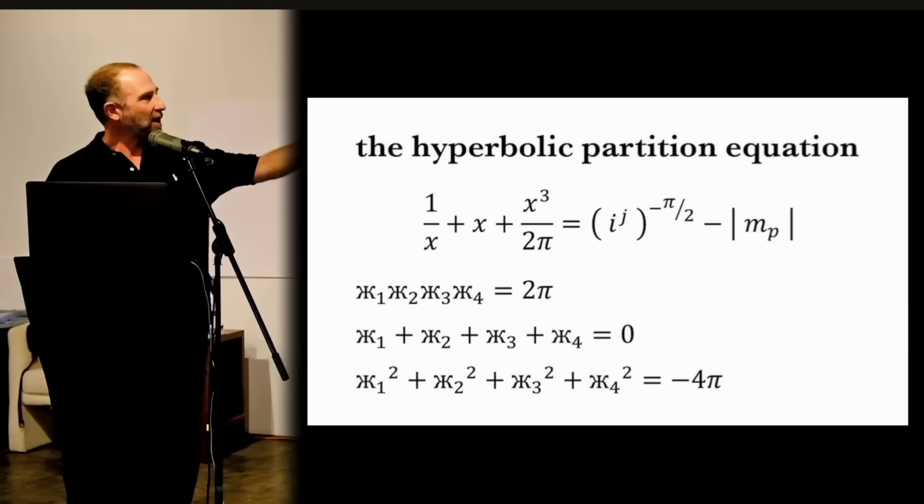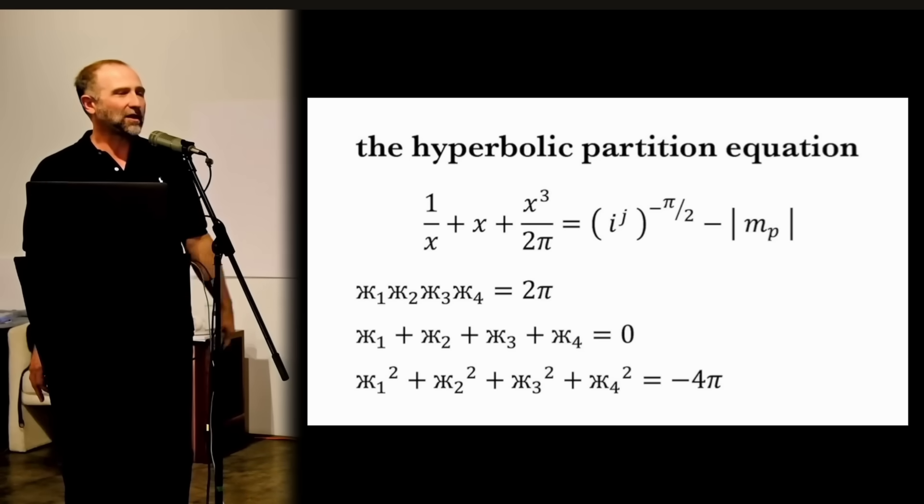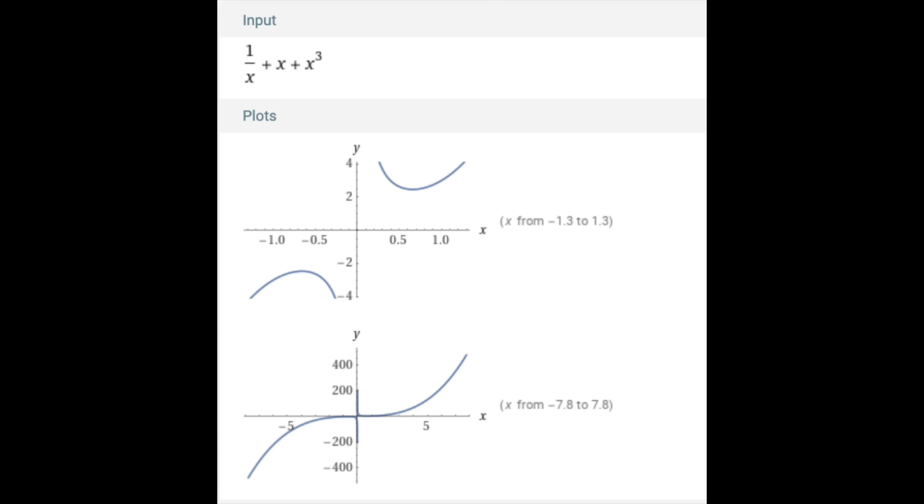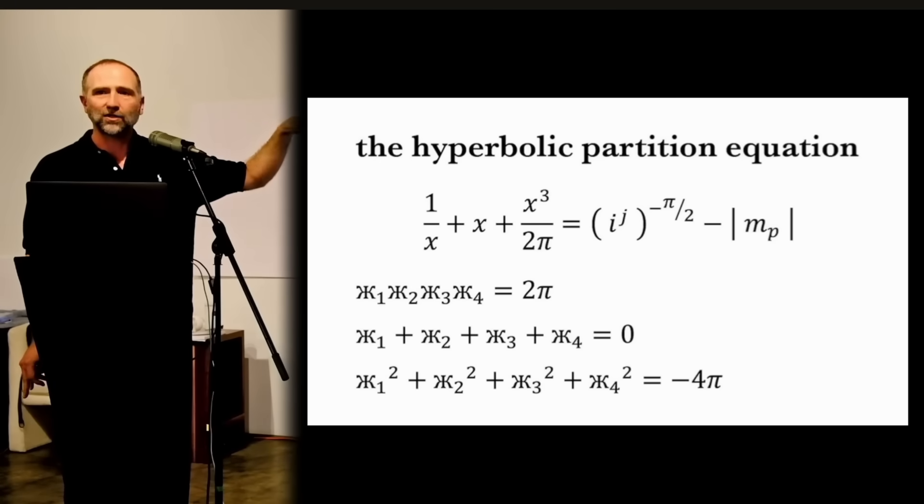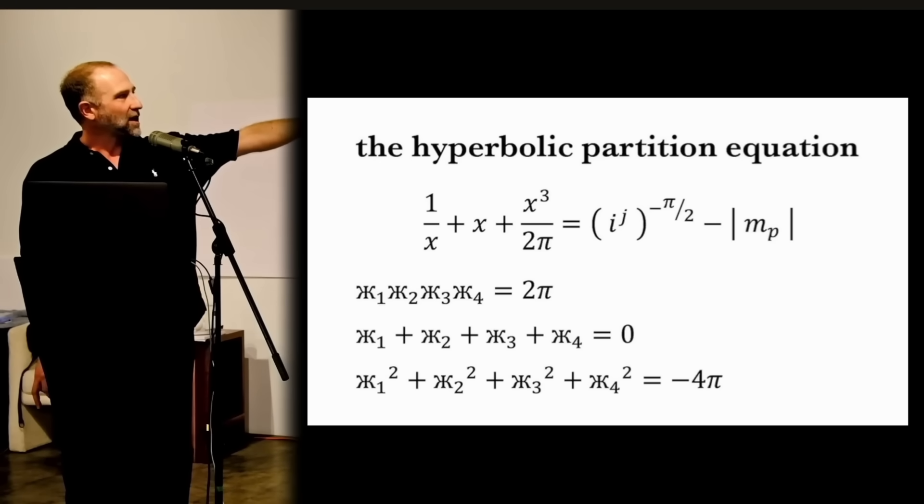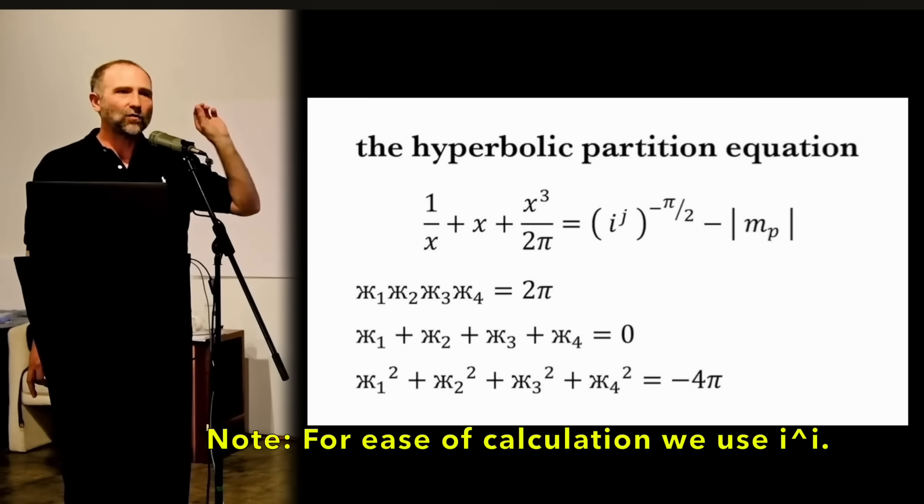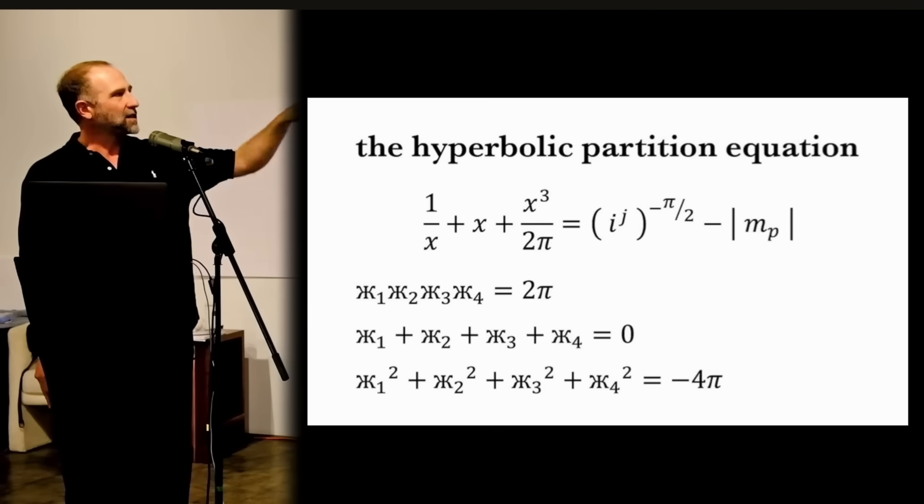A hyperbolic structure. And then we're dividing the volume element, the cubic element, by 2π. And i to the j, i is the square root of negative 1, j is also the square root of negative 1, but it's orthogonal to i, and then to the negative π over 2.